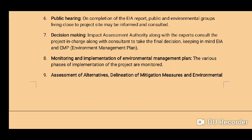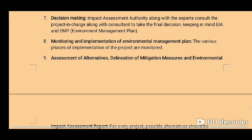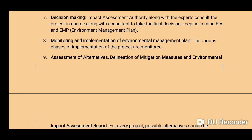Step six is public hearing — on completion of the EIA report, the public and environmental groups living close to the project site may be informed and consulted. Step seven is decision making — the impact assessment authority, along with experts, consults the project in-charge and consultant to take the final decision, keeping in mind the EIA and EMP (Environmental Management Plan).